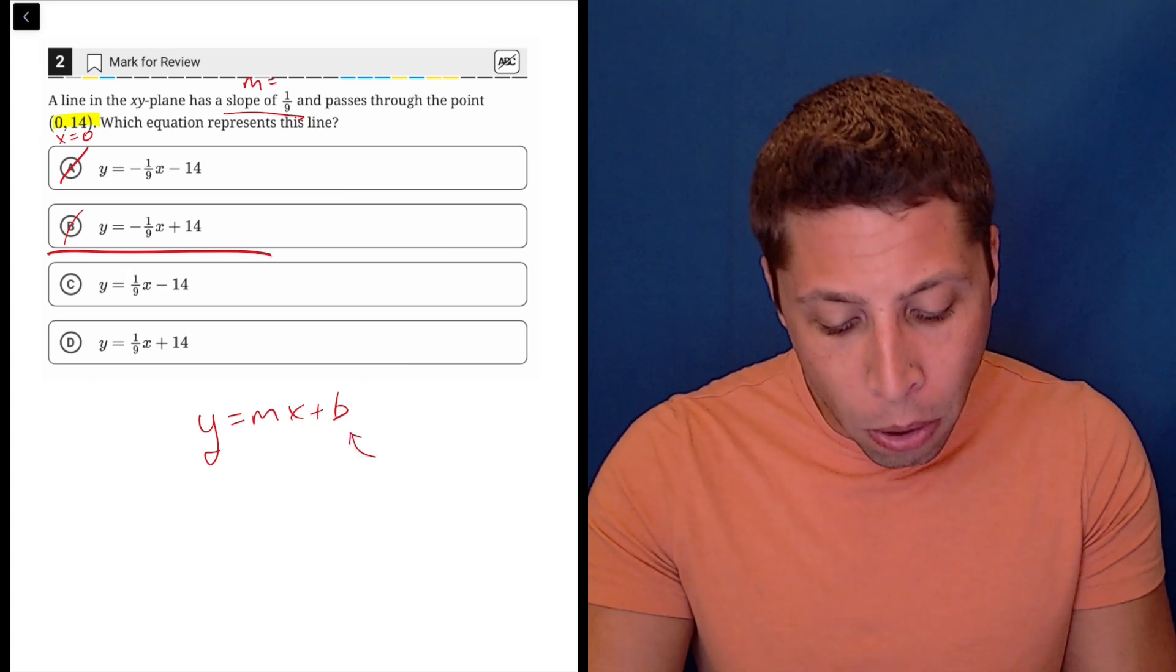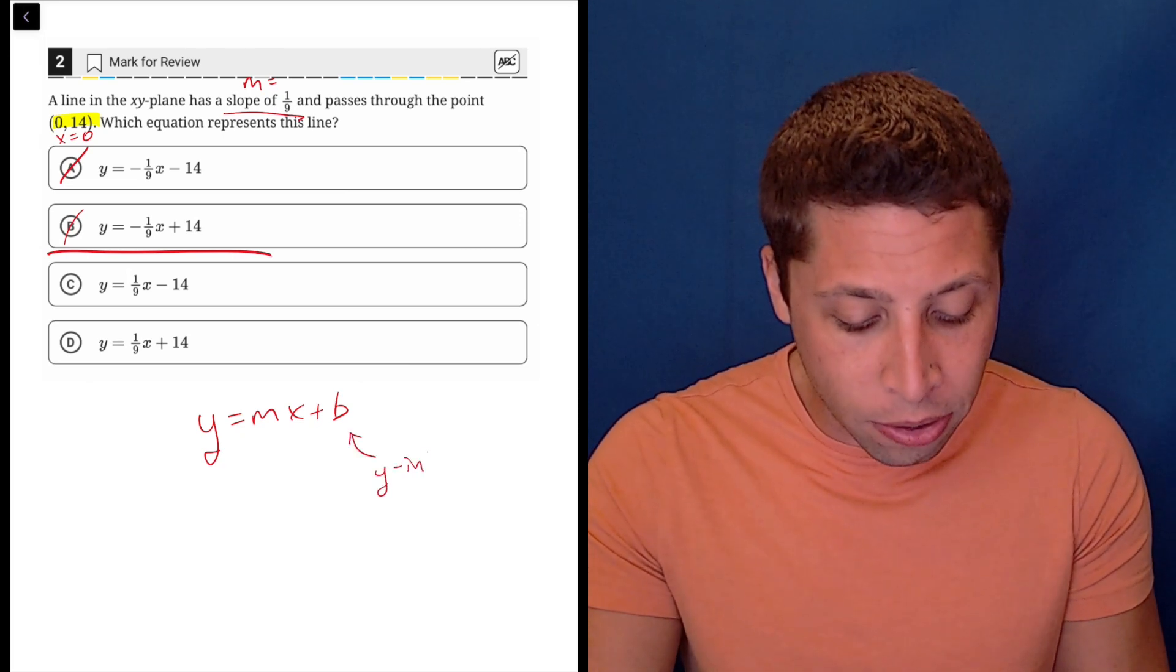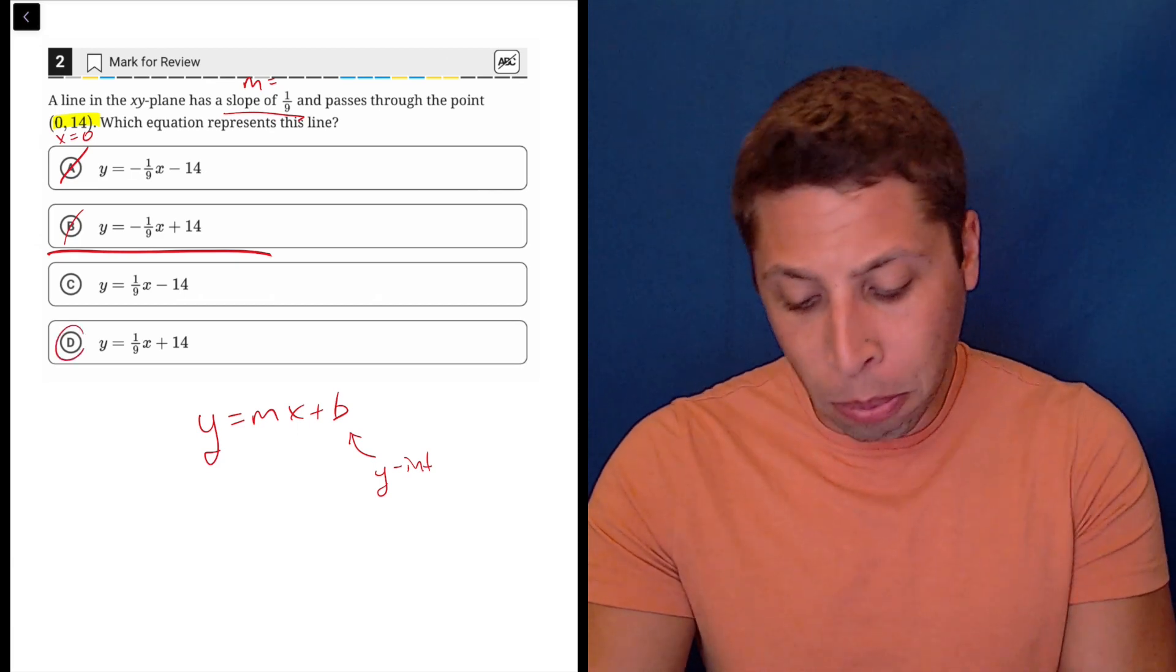but we should know from experience that every y-intercept has an x-coordinate of 0, so this fits the bill. The other component of the y equals mx plus b equation is the y-intercept, so that just puts us as choice D.